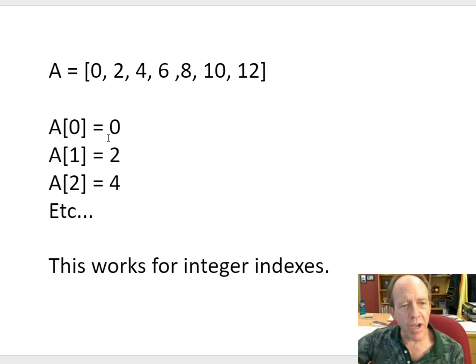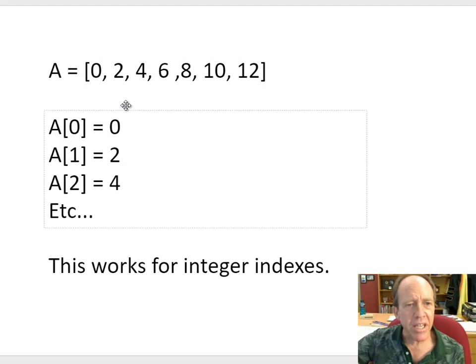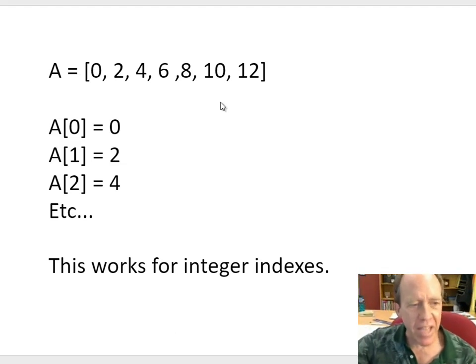So here you go. A of zero, that first element which is indexed at zero, is zero. A of one is two. A of two is four, et cetera. The indexes are integers. Those are numbers without decimal points at the end.